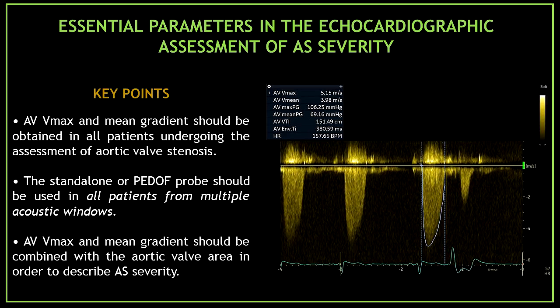Now, what are some key points when measuring these parameters? First, the aortic valve maximal velocity and mean gradient should be obtained in all patients undergoing assessment of aortic valve stenosis. Second, the standalone probe should be used in all patients from multiple acoustic windows. And third, the aortic valve maximal velocity and mean gradient should be combined with the aortic valve area in order to describe aortic stenosis severity.